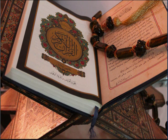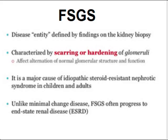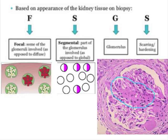Today we are going to discuss Focal Segmental Glomerulosclerosis. It is an entity defined by findings on the kidney biopsy, characterized by scarring or hardening of glomeruli. It is a major cause of idiopathic steroid-resistant nephrotic syndrome. Focal means only few of the glomeruli are involved.